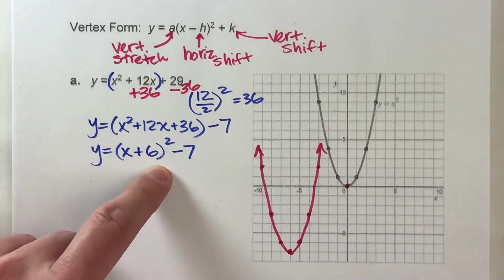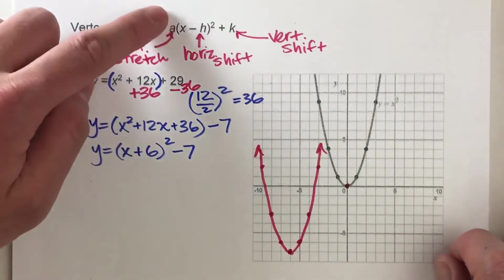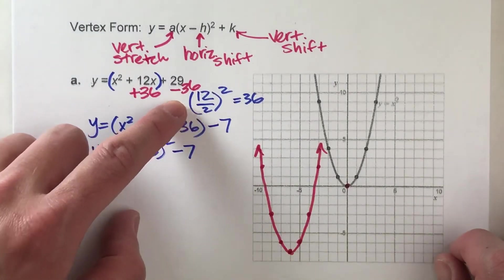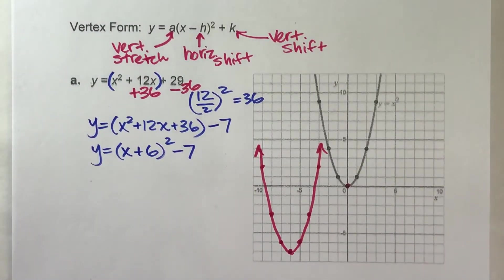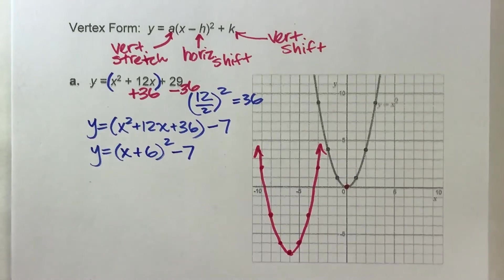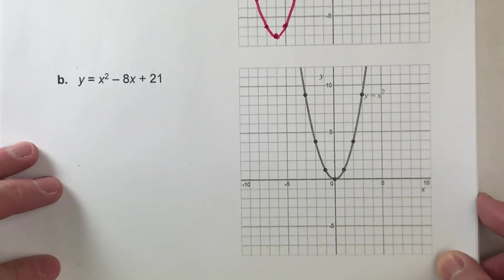But the key to this is trying to get it into this form by using this technique called completing the square. We'll do one more so you can get the hang of it. I'm going to shift it up. Here we go.